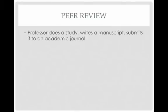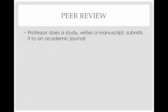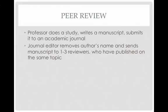What is peer review? Here's how it works. A professor does a study and writes a manuscript, with figures and tables at the end, and sends it to an academic journal. A journal editor — who is also typically a professor — removes the author's name and sends the manuscript to one to three reviewers who have published on the same topic. The reviewers don't know who they're reviewing — that's called a double-blind process — and the author doesn't know who the reviewers are. That way it's supposed to be more objective, evaluating the work based on its merits.